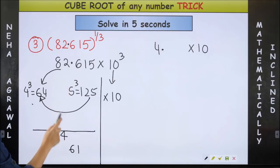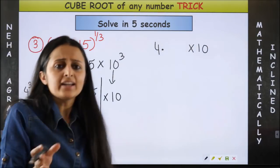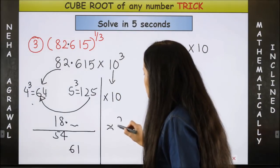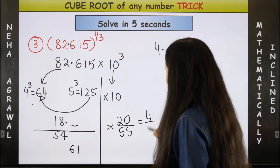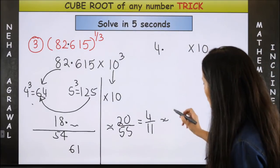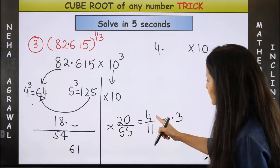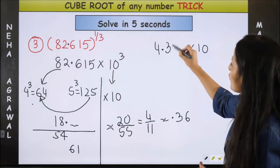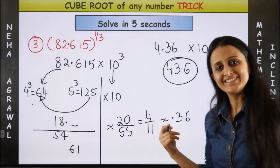Now look at the numerator. It will be 82.615 minus 64. So if I can take this to be roughly 18 point something, for easier calculations I can write it to be, let's say, 20 upon 55, which is going to be 4 by 11, which is going to be approximately 0.3, and then you will be left with roughly 0.36. So I can say 4.36, so 43.6 is approximately the answer.